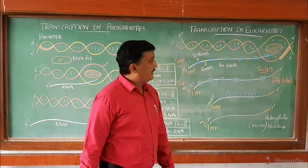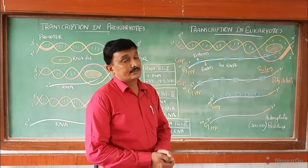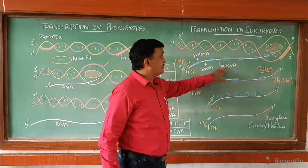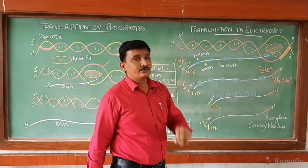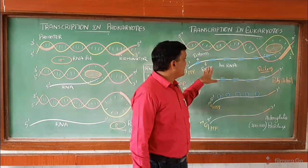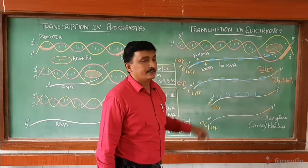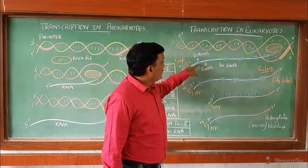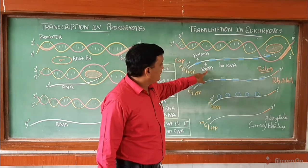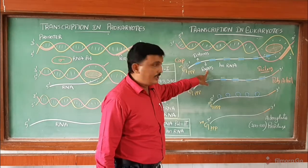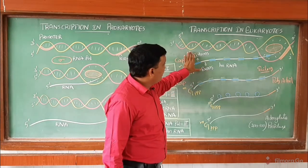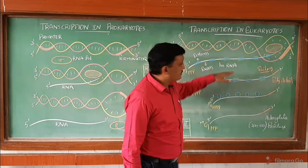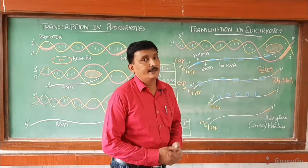After this, a process called splicing occurs. Why does splicing occur? Because this heterogeneous nuclear RNA consists of two types of sequences — introns and exons. Introns are non-coding regions, and exons are coding regions. The presence of both introns and exons in this RNA is why it is called heterogeneous nuclear RNA.